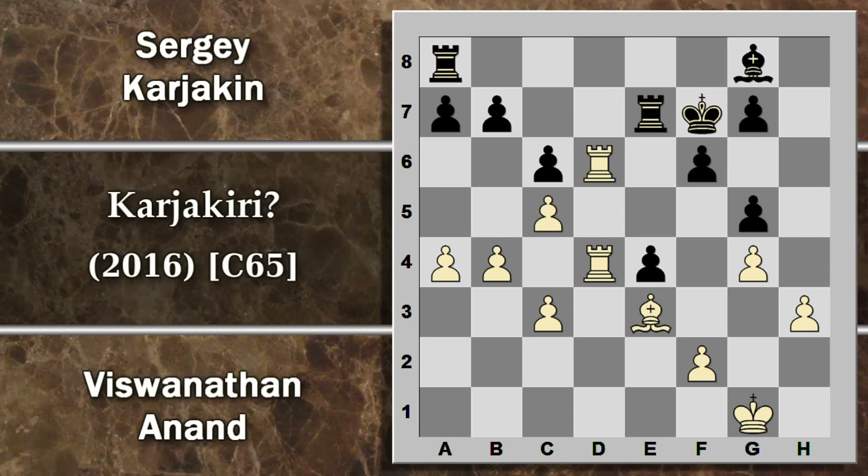Karjakin gioca alfiere G8, volendo in qualche modo attivare nuovamente questo alfiere, perdendo effettivamente dei tempi a far circolare l'alfiere. Anand può proseguire con B5: è chiaro che qui non può essere preso perché dopo la ricattura il bianco si fa facilmente il pedone passato. Viene giocata quindi torre C8 proprio per difendere questo pedone. Se il bianco prende si ritrova con due pedoni doppiati che non vanno da nessuna parte, quindi non si può catturare in C6.